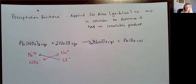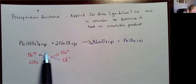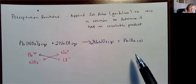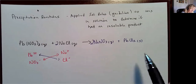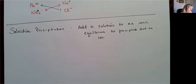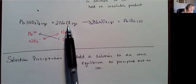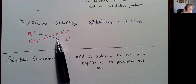We're going to build on that here in this chapter, and we're going to call this selective precipitation. It's the concept of just looking at what ions you have in solution and whether you're going to be able to form an insoluble product. I'm going to apply that here if I want to precipitate an ion.